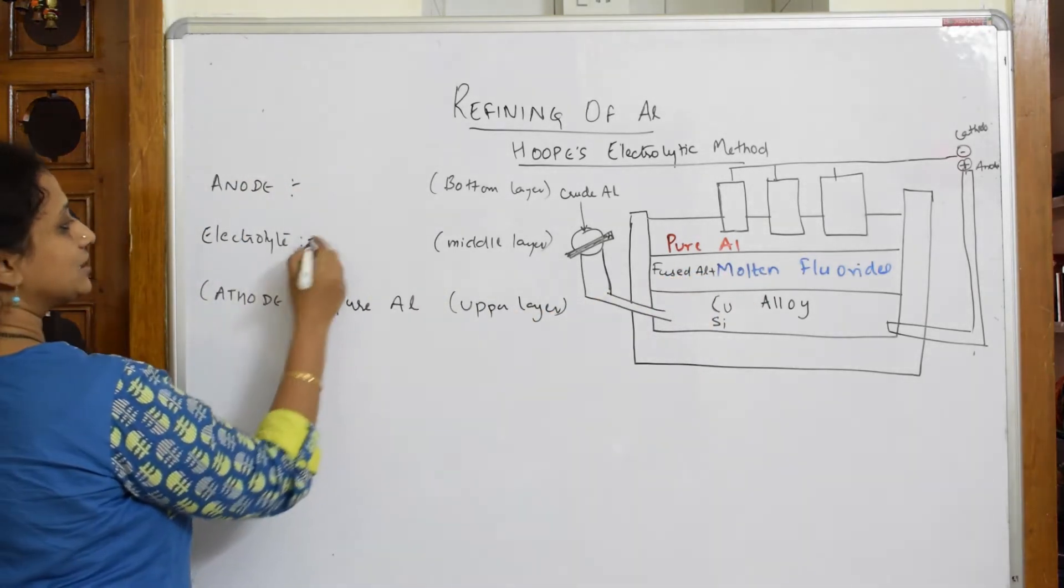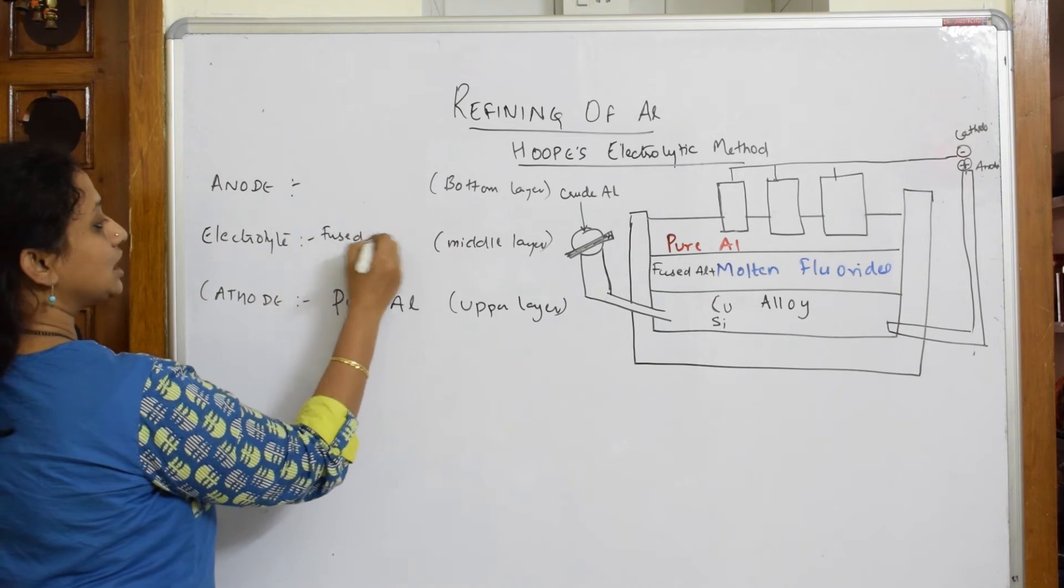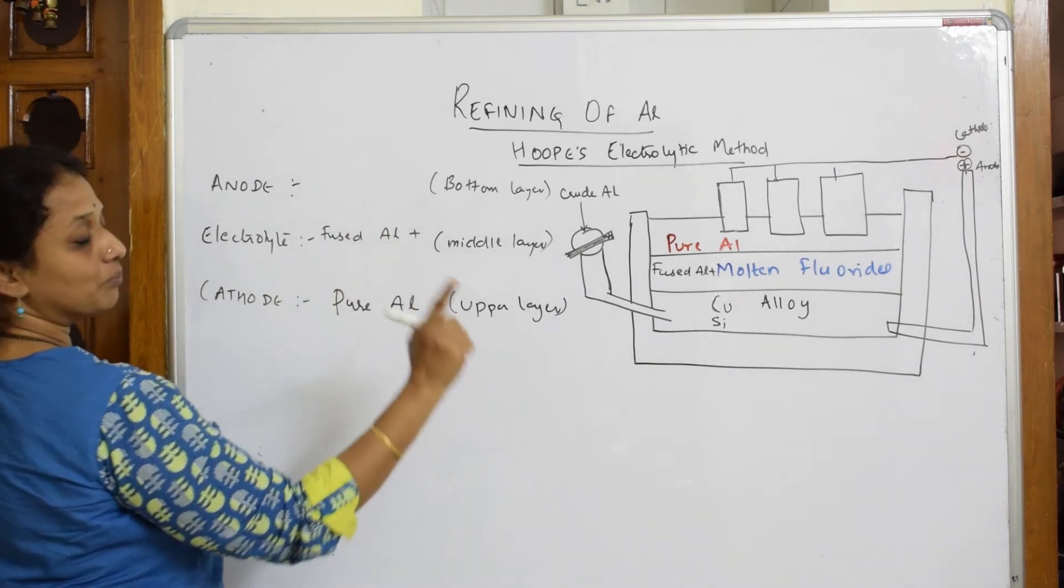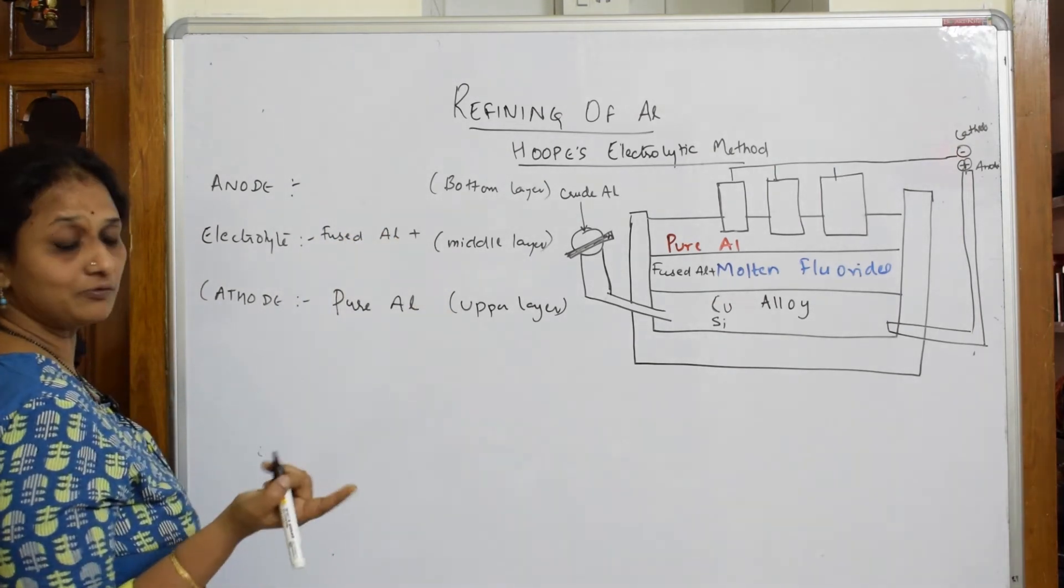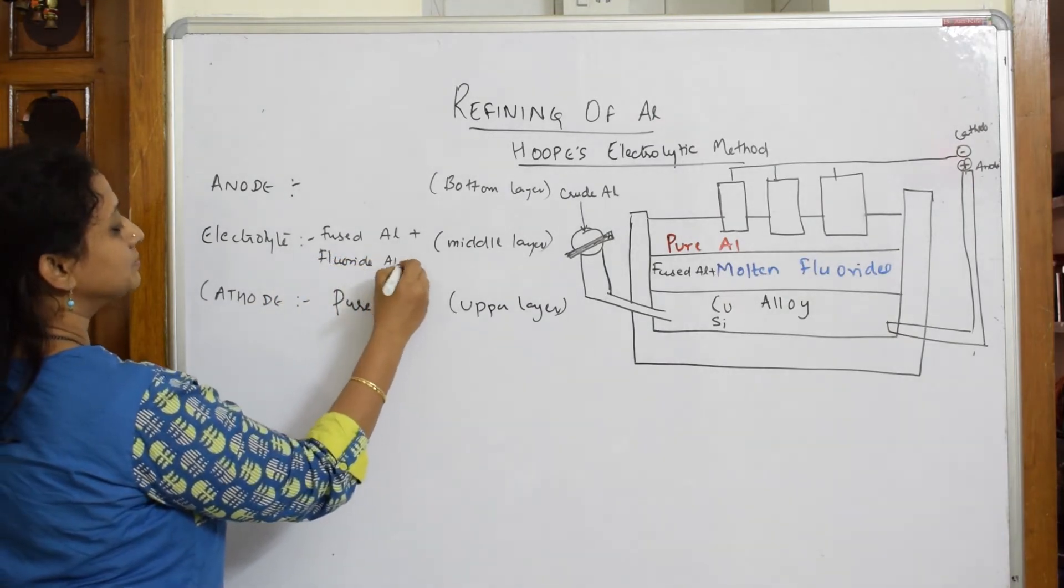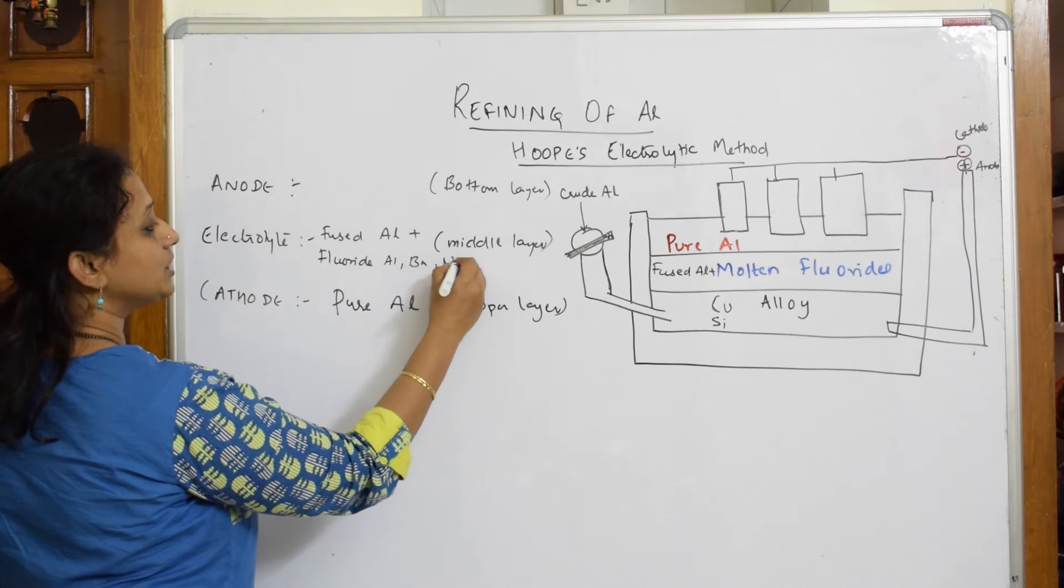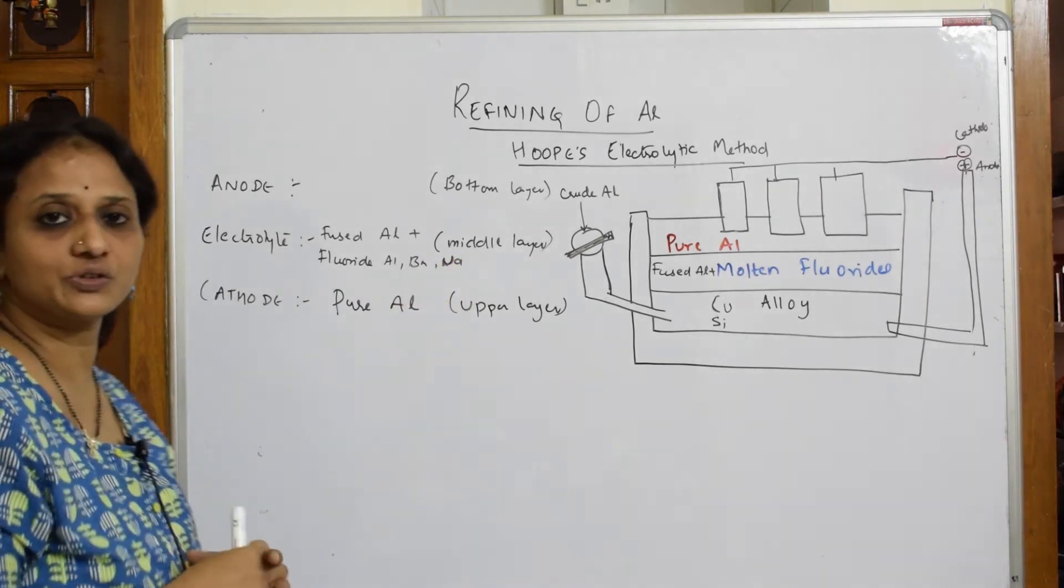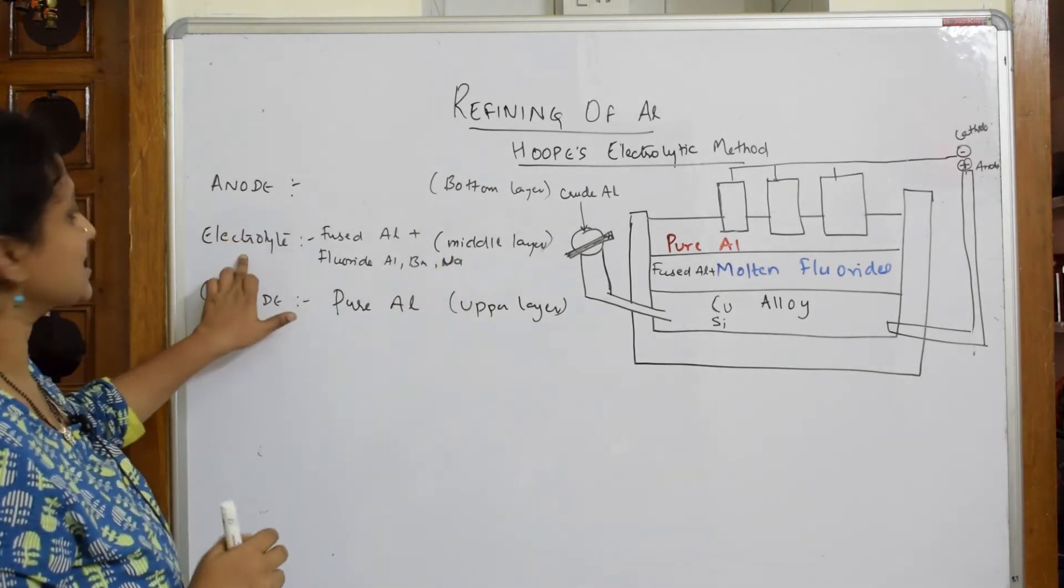Now here along with this molten fluoride, you have fused aluminum also. Fused aluminum plus molten fluoride. So the electrolyte here is fused aluminum plus metal fluorides or molten fluorides of what? Fluorides of aluminum, barium, sodium. Yes, all these fluorides are going to fuse together that will be a middle layer which acts as an electrolyte.